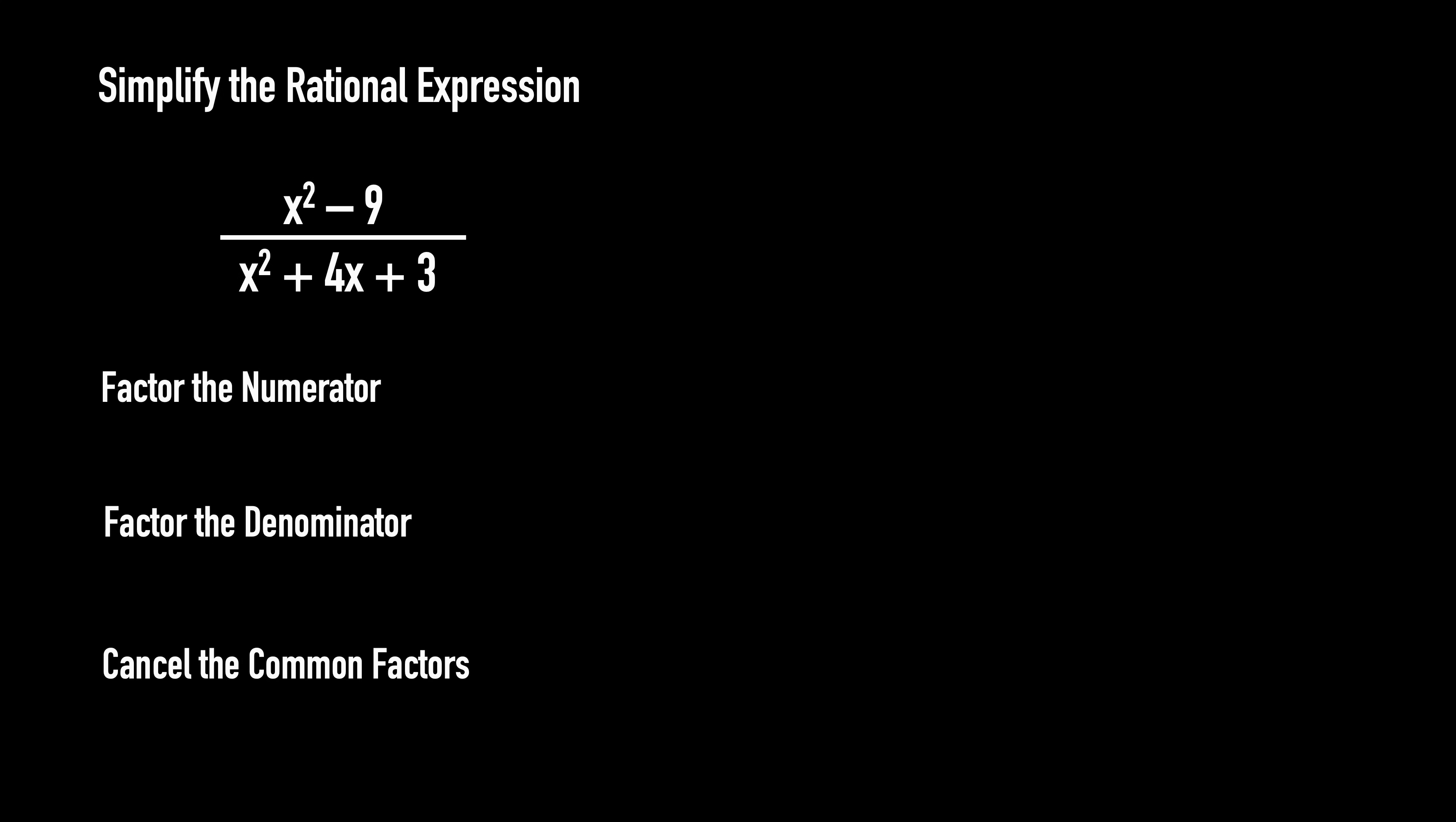Simplify the rational expression. As introduced in Demo 1, we first factor the numerator and denominator, then cancel any common factors. But why factor first?